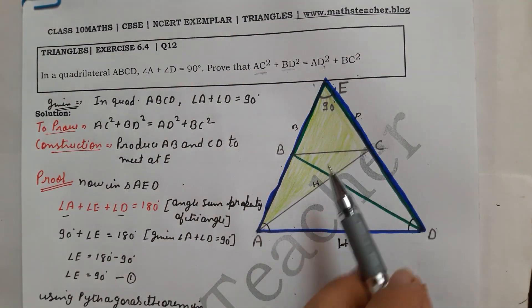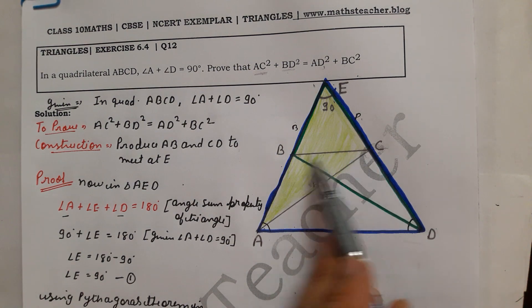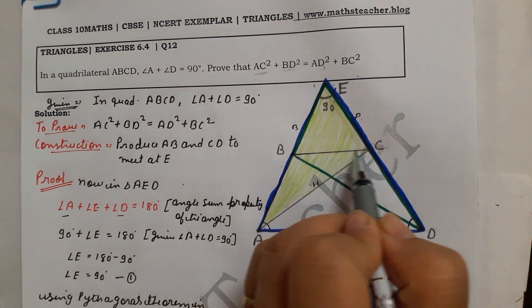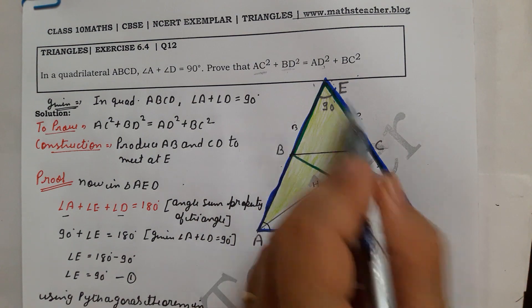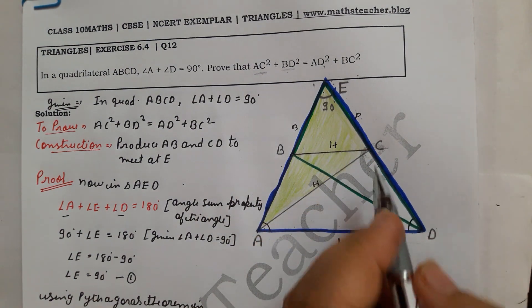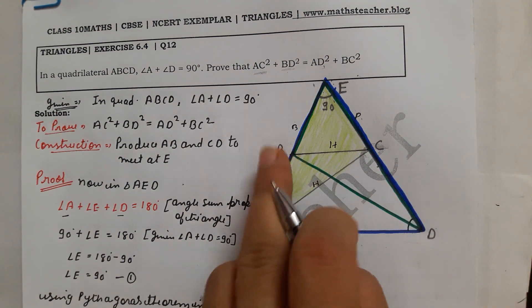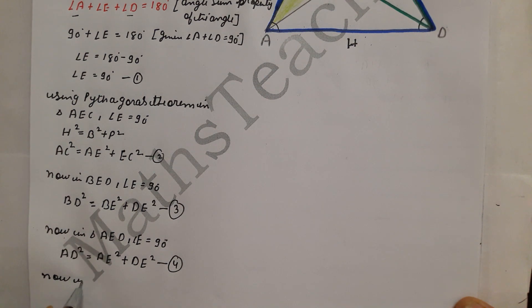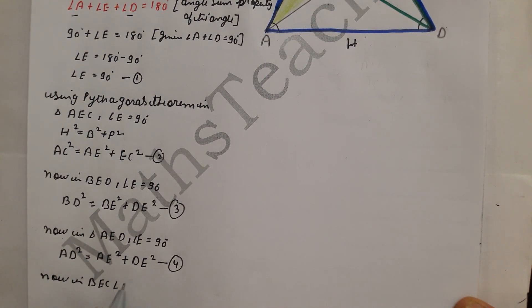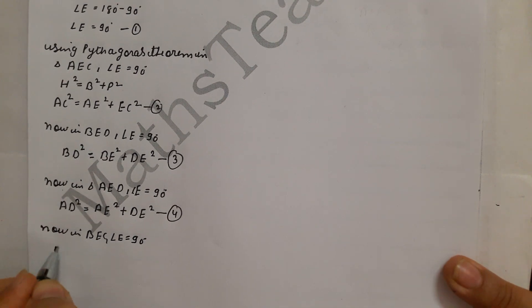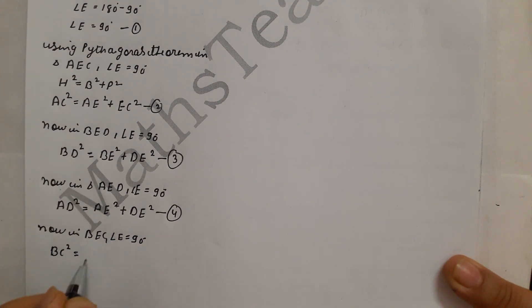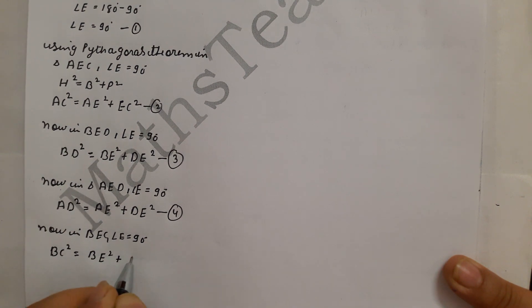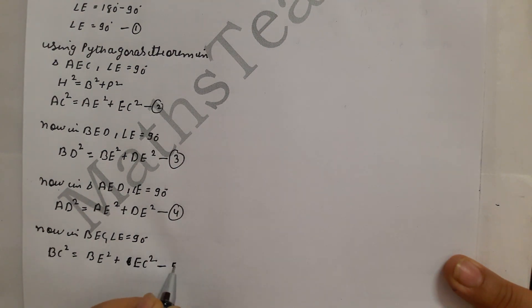For BC², we use the small triangle BEC. Angle E is 90 degrees, so BC is the hypotenuse. Applying Pythagoras theorem in triangle BEC: BC² equals BE² plus CE². This is equation number 5.